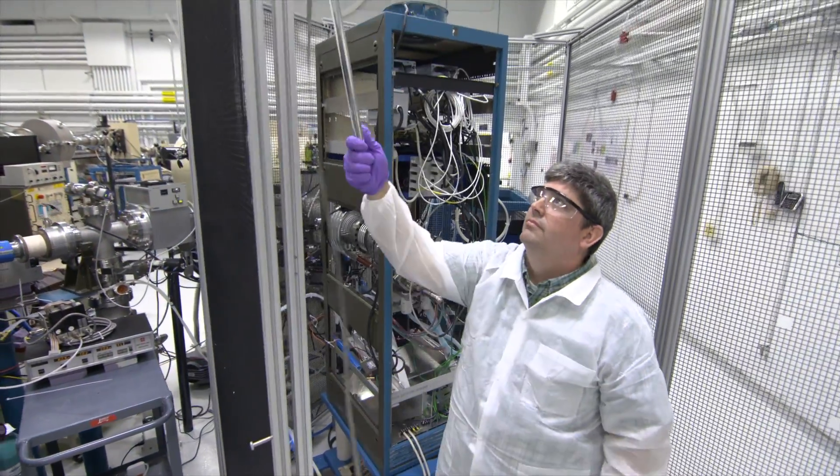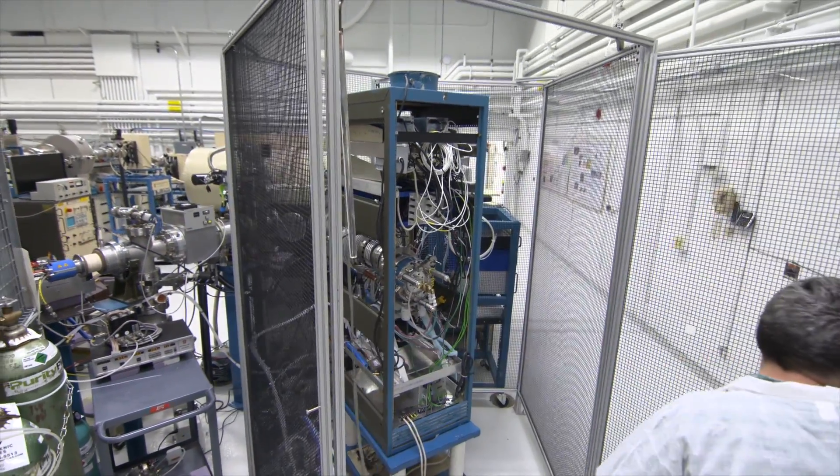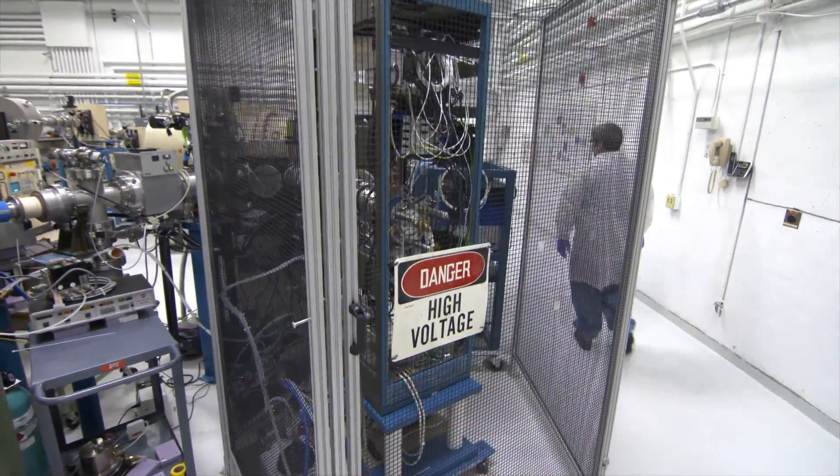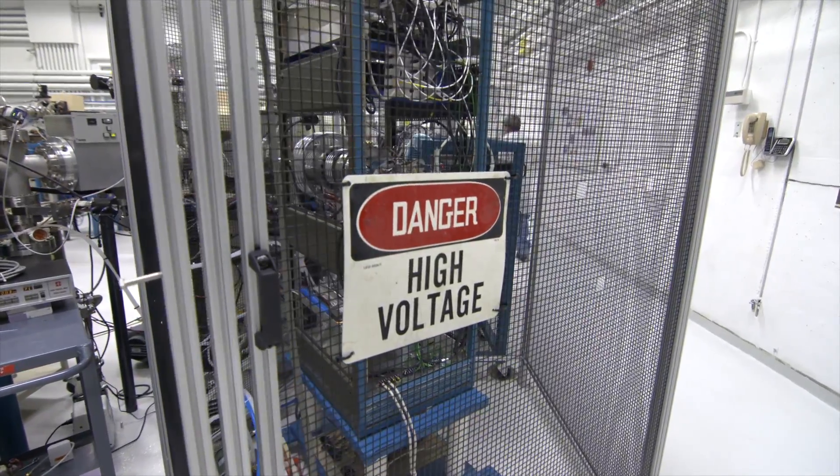The multi-cathode SNICS is a sputter source that consists of a set of cathodes that can be rotated into the sputter chamber without breaking vacuum, thus providing for longer irradiations with minimal interruption.